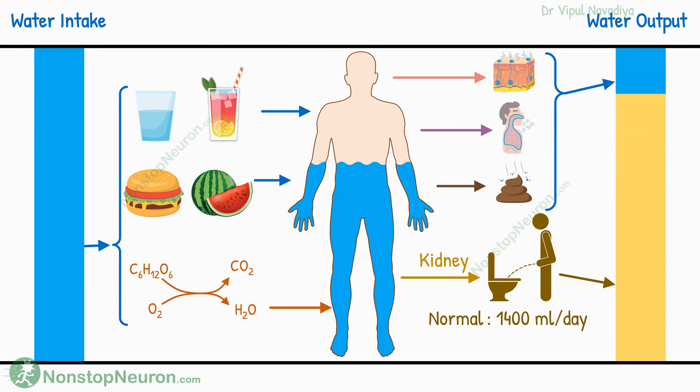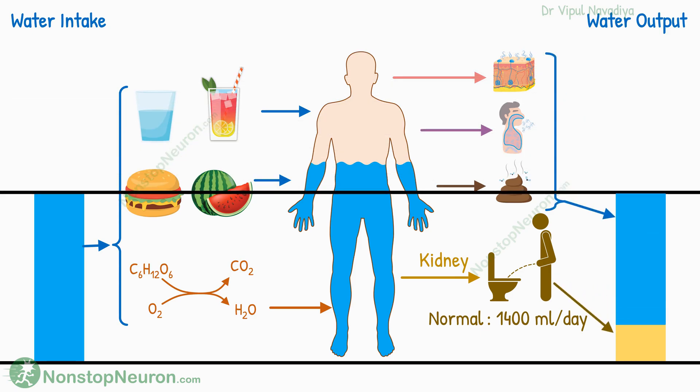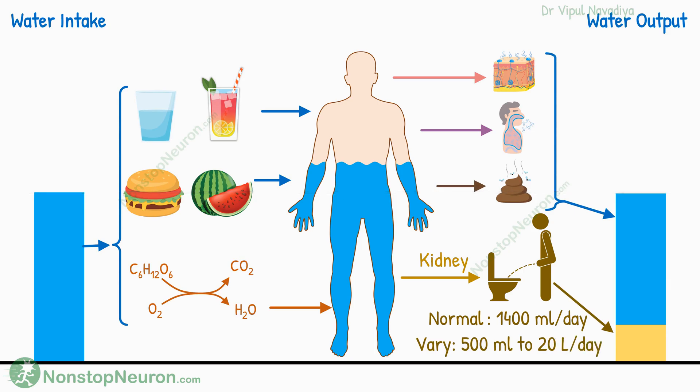This keeps the total intake and output equal. And if the intake is less or water loss by other routes is more, the urine volume decreases. So the water lost in urine can vary from 500 ml to 20 liters in different situations. In short, the kidneys maintain a balance between water intake and output to maintain nearly a constant level of water in the body.